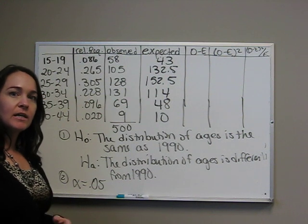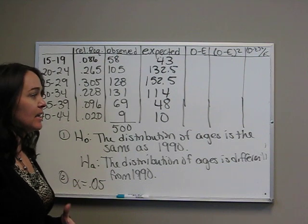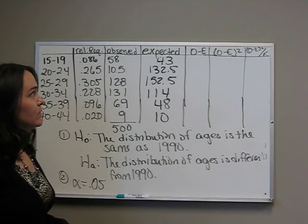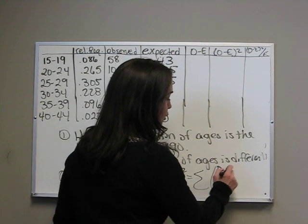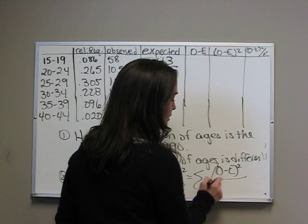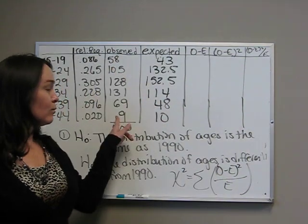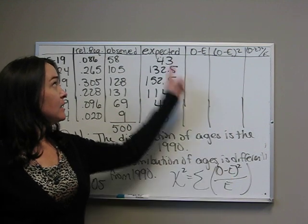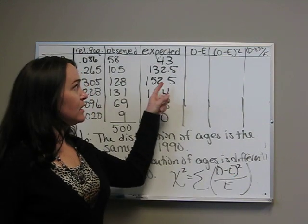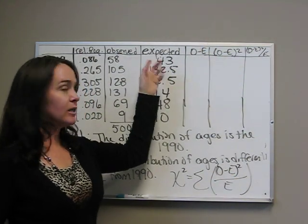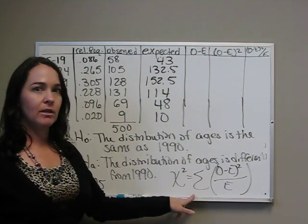Step 3 is our test statistic. This is the goodness of fit test is a chi-squared value. To find that, the chi-squared is the summation of O minus E squared divided by E. O is the observed, what we're given. E is the expected, what we calculated. So we have to subtract each of them, square it, and then divide by our E. So we're going to have six things that we're going to have to find, and then add them all up.